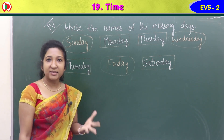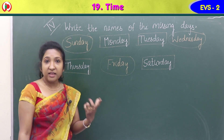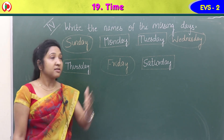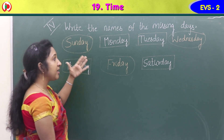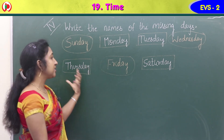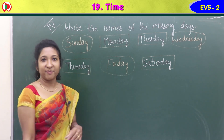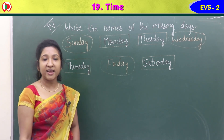It's easy — you know that seven days form a week: Sunday, Monday, Tuesday, Wednesday, Thursday, Friday, and Saturday. Fill in the missing days accordingly.